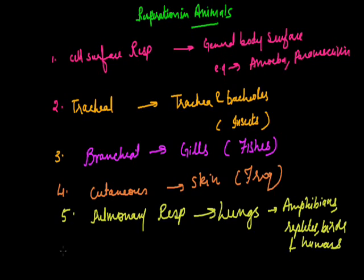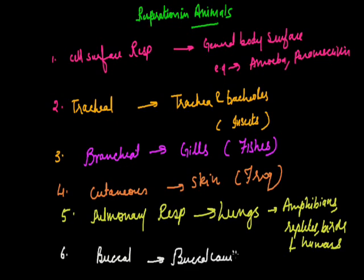The last type is buccal respiration, which occurs with the help of the buccal cavity. This is very well developed in the frog and is common in frogs. This covered all the types of respiration based on the organs involved.